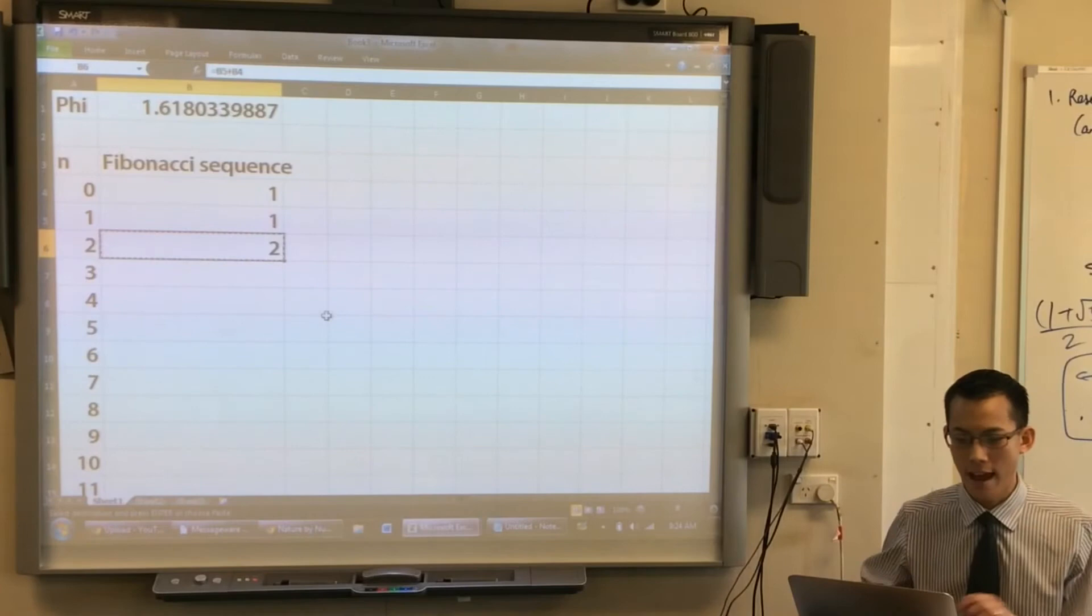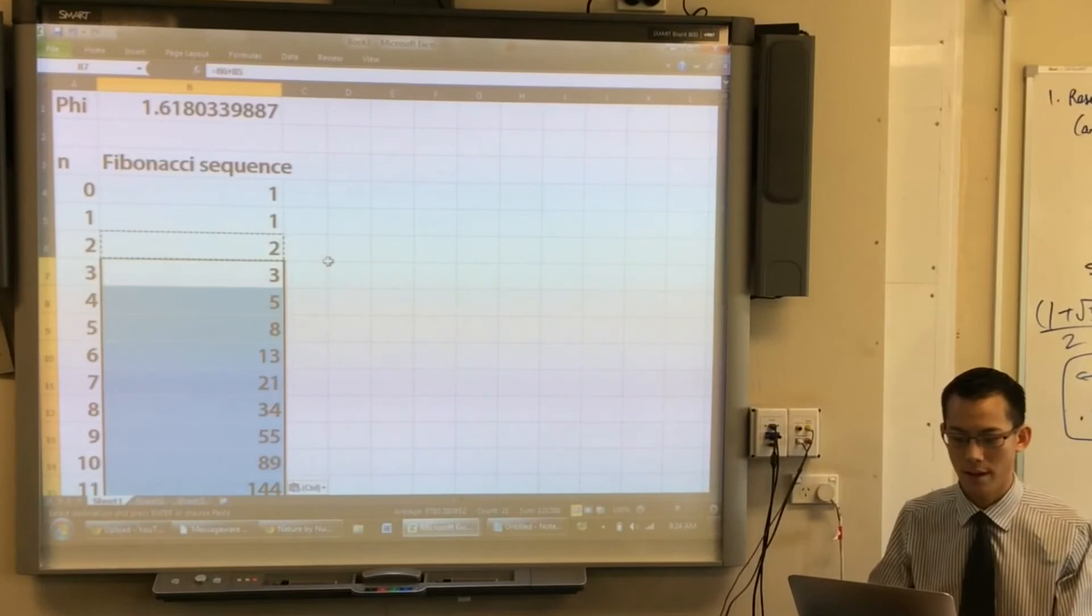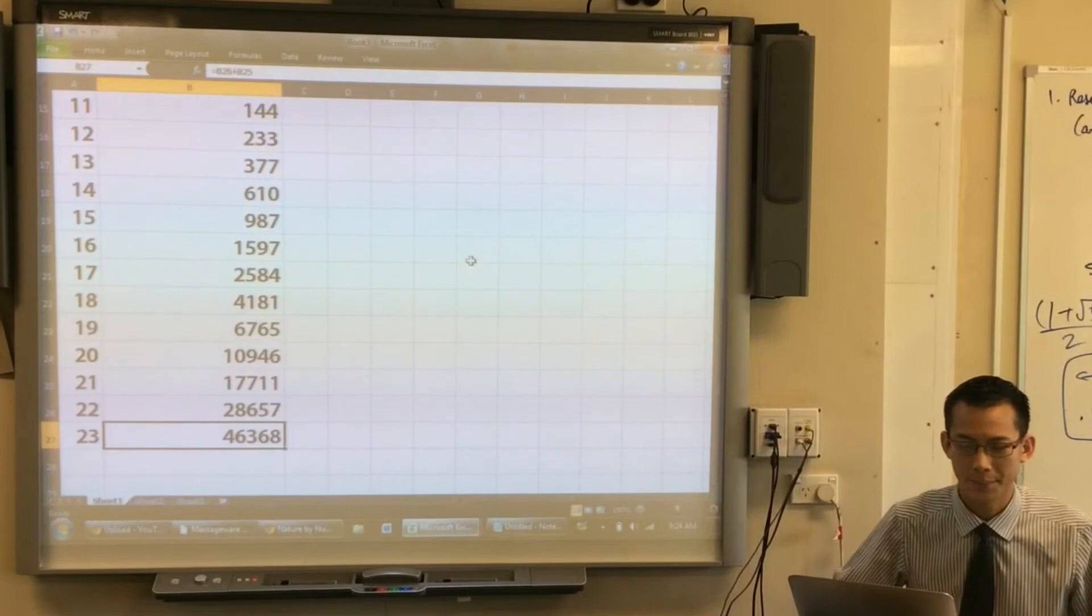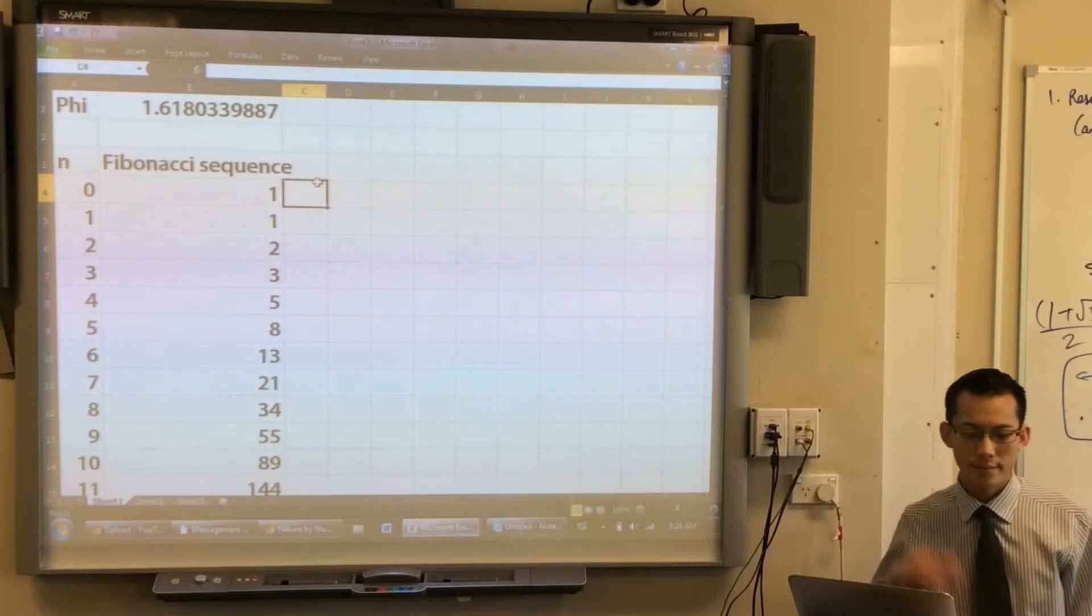But now that I've done a formula, I can copy that, and then I can go to all these cells down here and just paste it, like so. And voila, there is the familiar Fibonacci sequence. And at least I'm calculating up to 46,368. So you've got your Fibonacci sequence there.